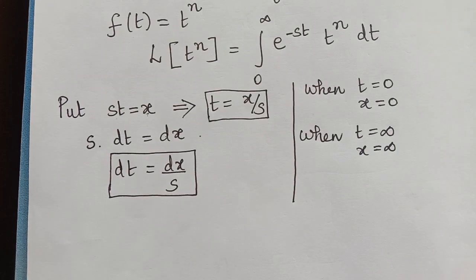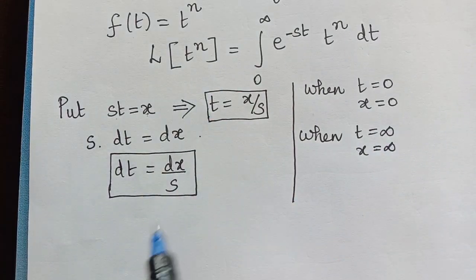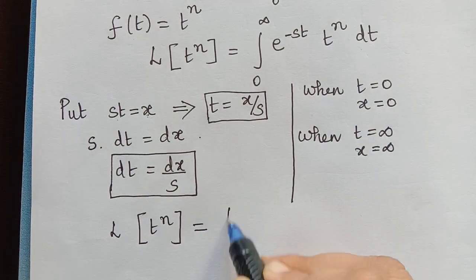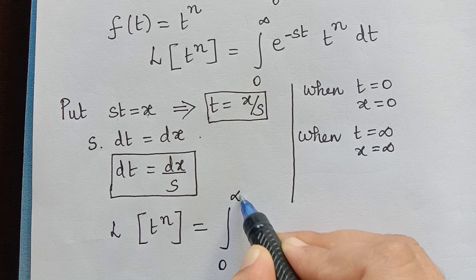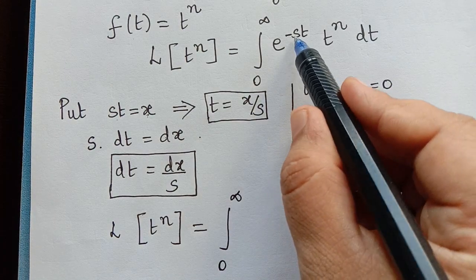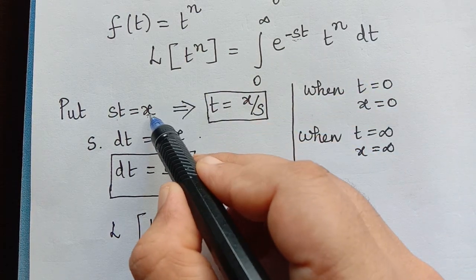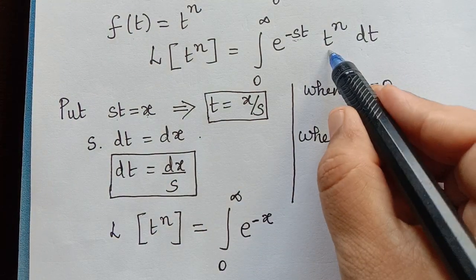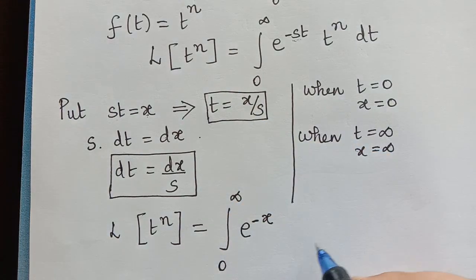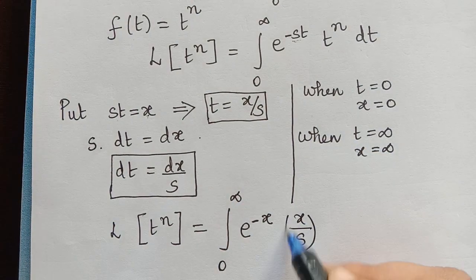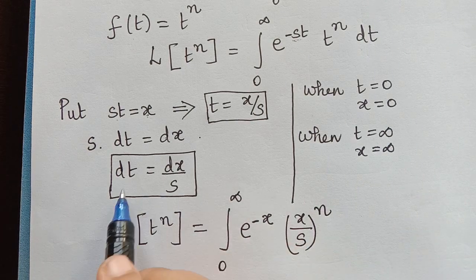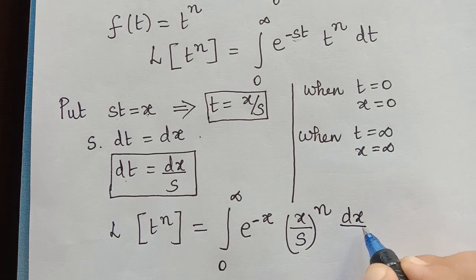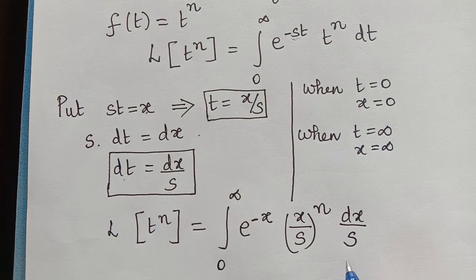Now let us apply this substitution. The Laplace transform of t to the power n becomes the integral from 0 to infinity of e to the power negative x, times x over s to the power n, times dx over s.